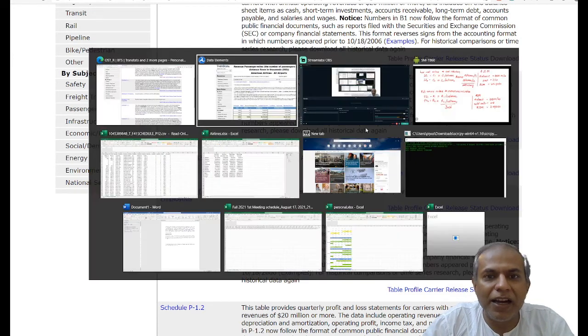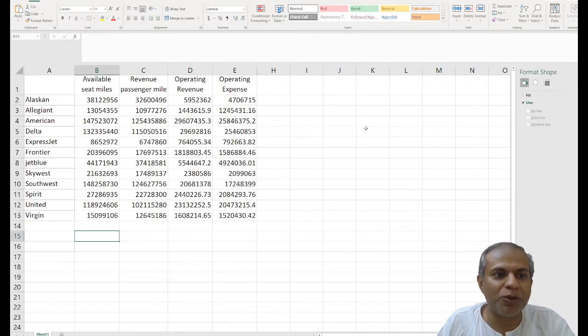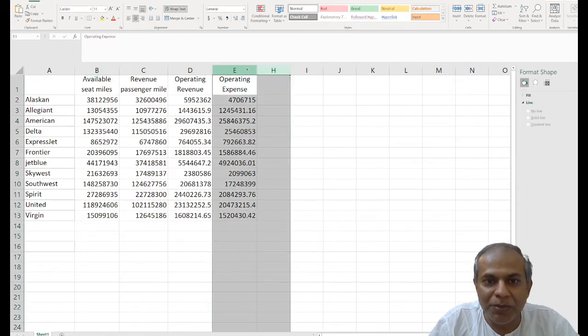I use that and get it into this table that I have. So I took dominant airlines in 2017 and made this table up of available seat mile, revenue passenger mile, operating revenue, and operating expense. Now based on this information...